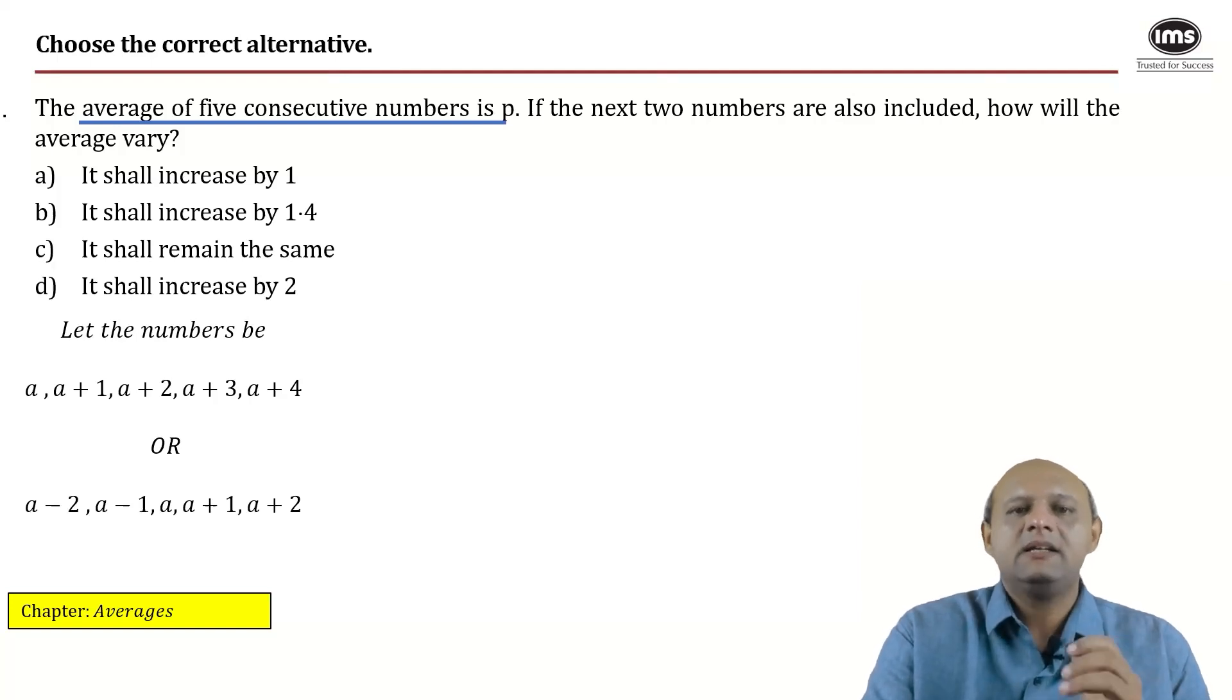So if the central number is a then the fourth number would be a plus 1, the fifth would be a plus 2, the second would be a minus 1, and the first would be a minus 2. So this is also a fair assumption to make.